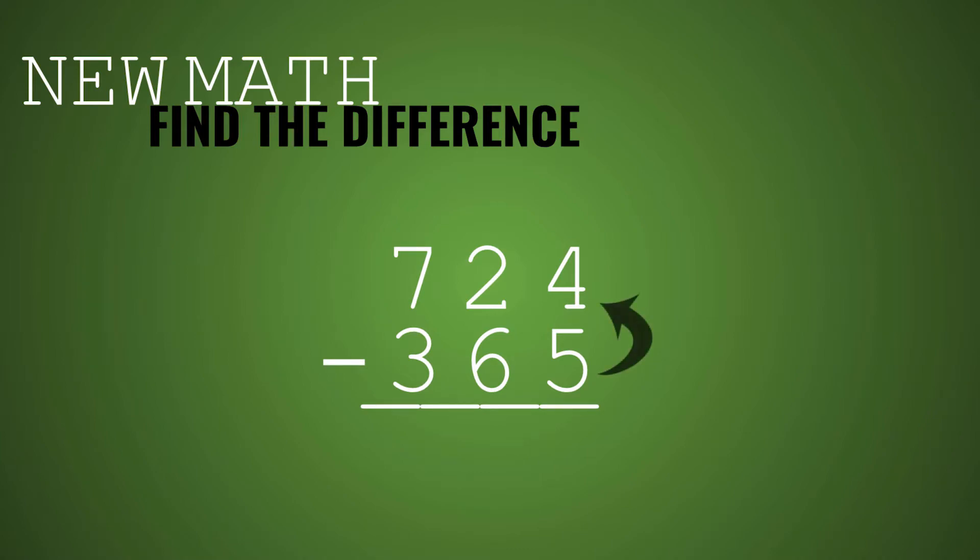So we try to take 5 from 4, but we can't. So we have to borrow from the tens place. That 2 becomes a 1 and then that 4 becomes a 14. 14 minus 5 is 9. And then we look at the tens place. This is all regrouping because you're taking 1 from one place value and regrouping it to the other.